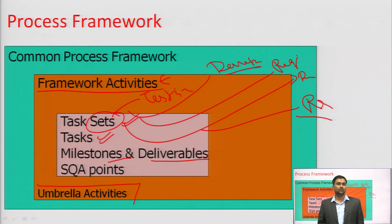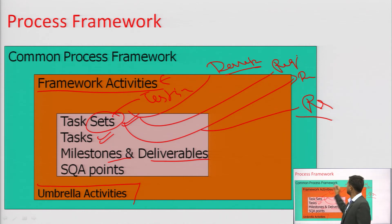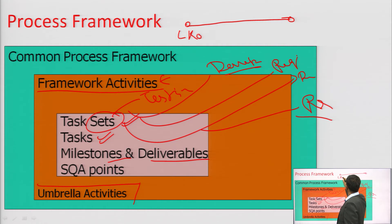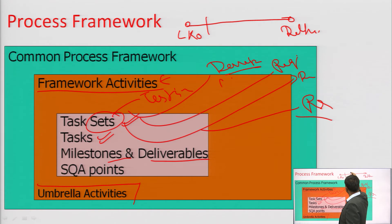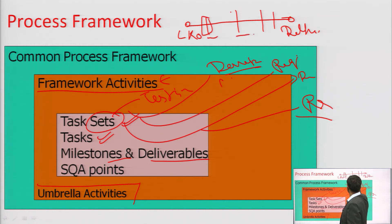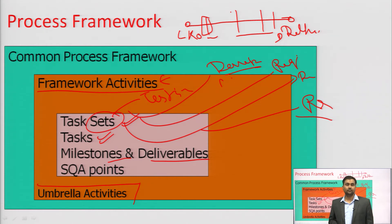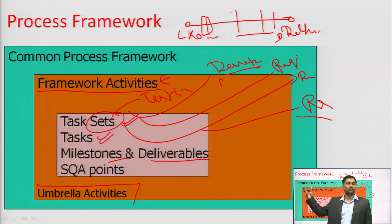Modules must be delivered at the specified time. If we take Facebook as an example: login page built and delivered first, then photo module, chat module — timelines and deadlines are fixed. We tell the client at the start when each delivery will happen. If the project gets delayed, that is a problem. Like traveling from Lucknow to Delhi on an expressway — you set milestones and must reach at the right time. Same in software: if different modules are completed on time, the project is delivered on time.